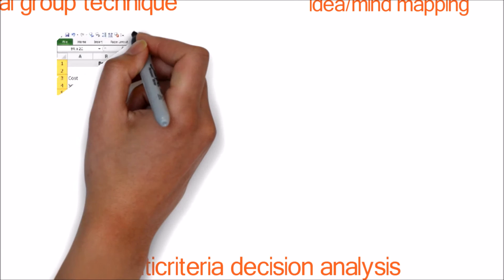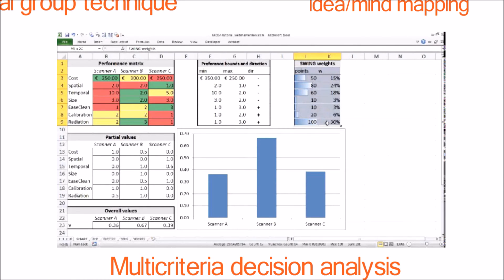Multi-criteria decision analysis: a technique that utilizes a decision matrix to provide a systematic analytical approach for establishing criteria, such as risk levels, uncertainty, and valuation, to evaluate and rank many ideas.